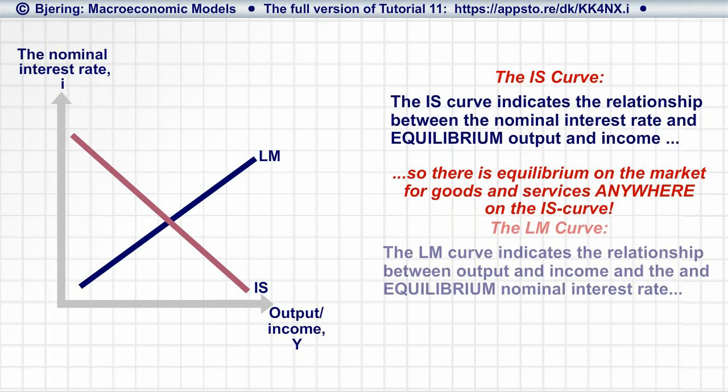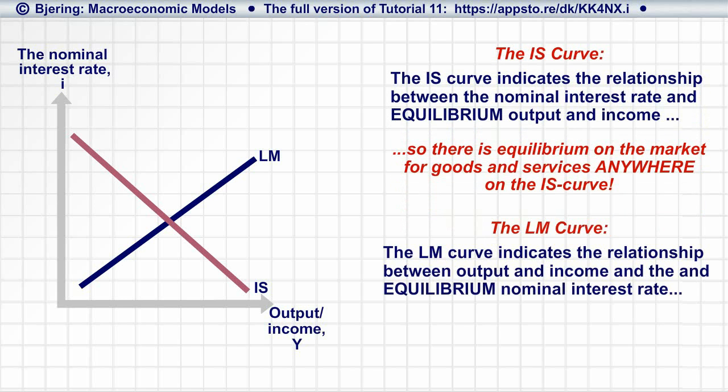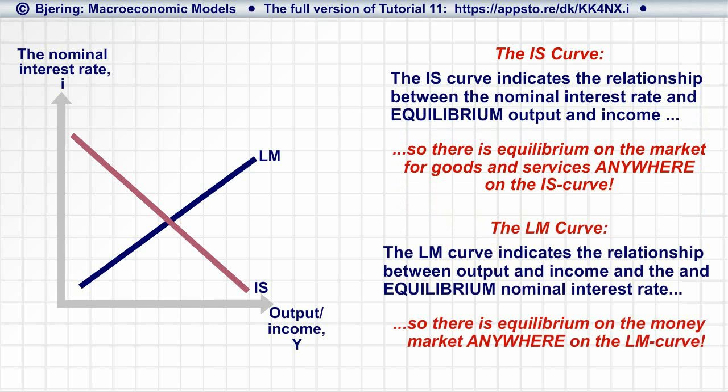Also, since the LM curve indicates the relationship between Y and the equilibrium nominal interest rate, there's equilibrium on the money market anywhere on the LM curve.